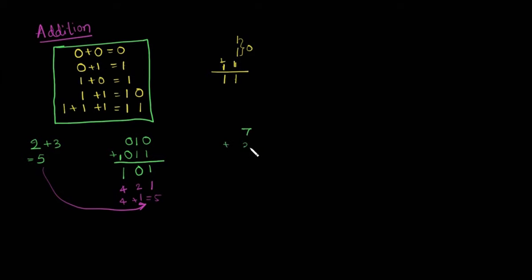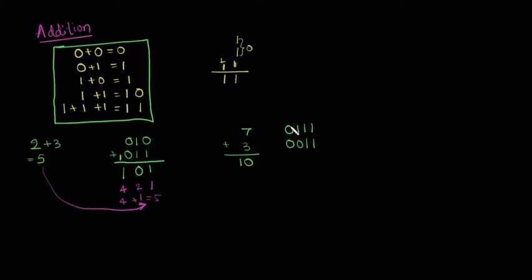Let us take another example: 7 plus 3 equals 10 in 4-bit binary representation. We can write 7 in binary as 0,1,1,1. 7 is nearest to 8 and the difference is 1, so we write 0 in the position of 8 and remaining all 1s. Similarly, 3 we write 0,0 in the position of 4 and remaining all 1s, giving 0,0,1,1.